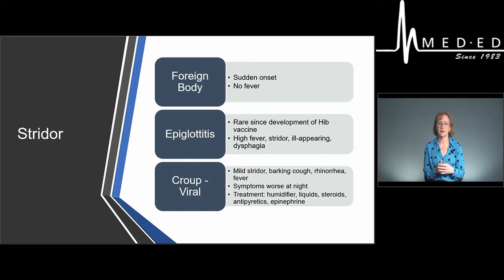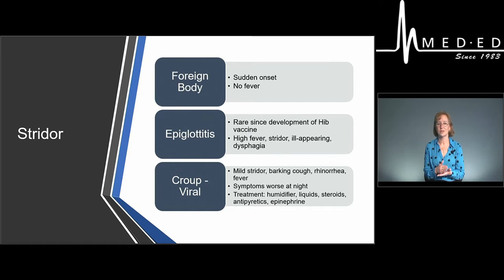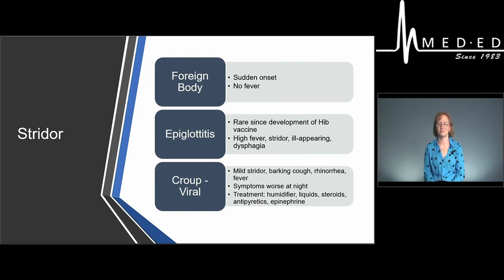Early steroids are shown to help decrease symptoms because steroids are anti-inflammatory and decrease the swelling and inflammation in the airway. The typical steroid used is 0.6 mg/kg of dexamethasone. It can be given by mouth — there's no reason to give it IM. The bioavailability of oral steroids is just as good as IM, and an intramuscular injection makes the kid cry, which can briefly worsen symptoms.